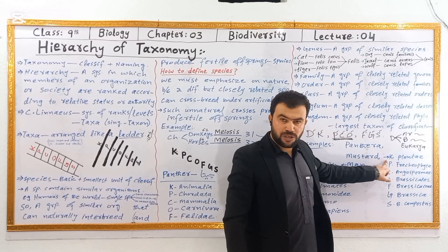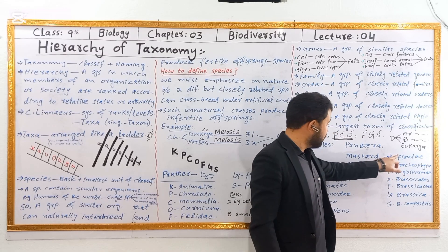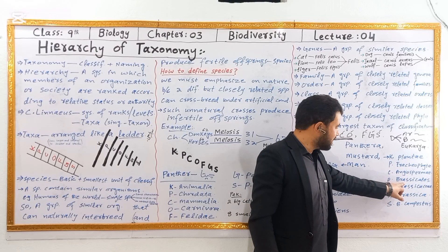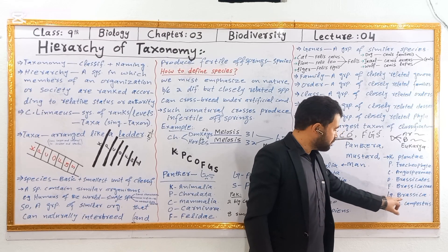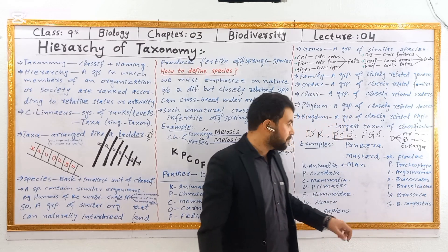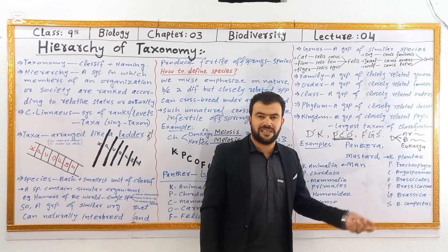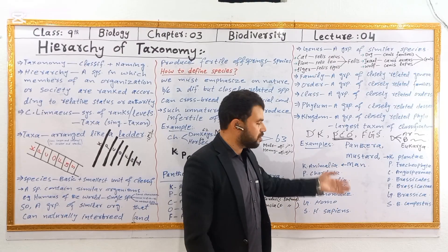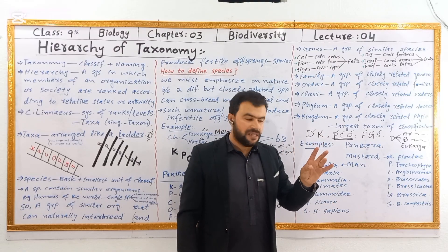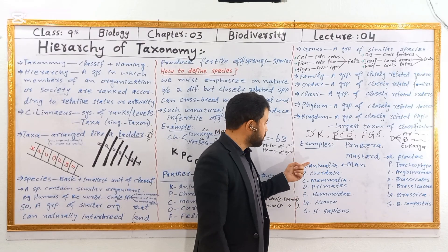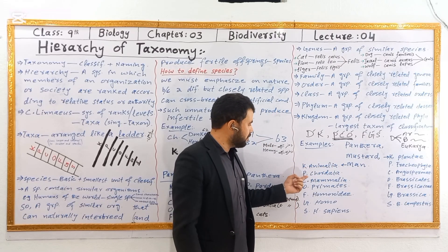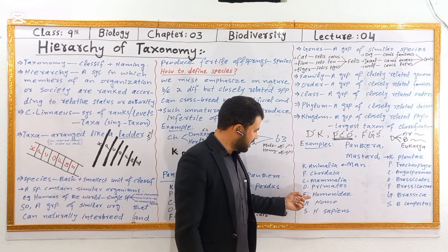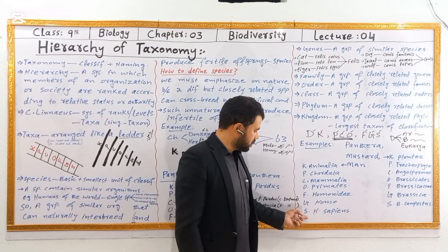For example, the mustard plant classification: kingdom Plantae, phylum Angiospermia, class Geospermia, order Brassicales, family Brassicaceae, genus Brassica, species Brassica campestris. For the human classification: kingdom Animalia, phylum Chordata, class Mammalia, order Primates, family Hominidae, genus Homo, species Homo sapiens.